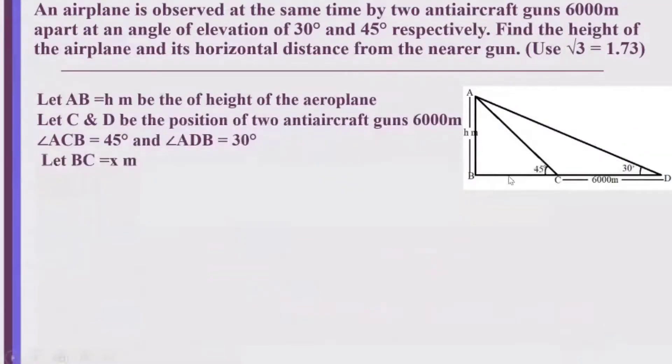I take BC to be X meters. Now, if you see the triangle ABC right-angled at B, I take tan 45. Tan 45 will be equal to the perpendicular side upon the adjacent side. So, I get tan 45 is equal to AB upon BC which is equal to H upon X. And tan 45 I know is equal to 1. So, I get 1 is equal to H upon X, that makes my work easier because H is equal to X. And this becomes my first equation.